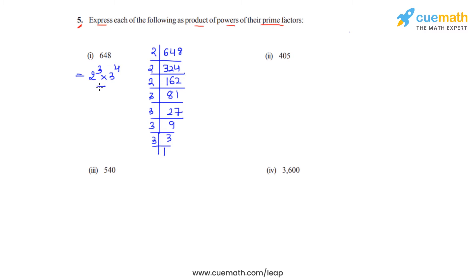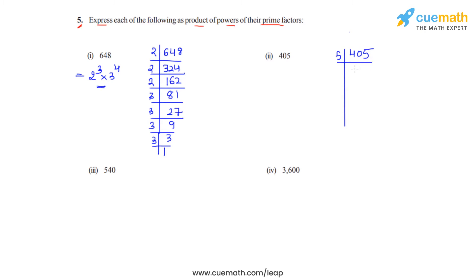Now we will go on to the second part which is 405, so let's prime factorize it. We will be dividing it first by 5 as it is divisible by 5 and 5 is a prime number. So on dividing it by 5 gives us the answer as 81.